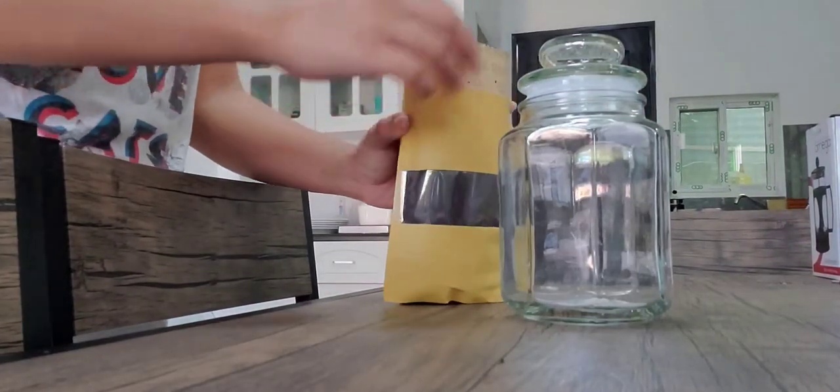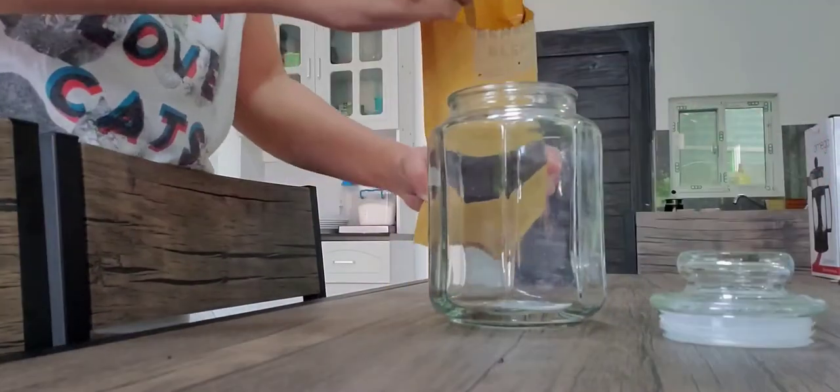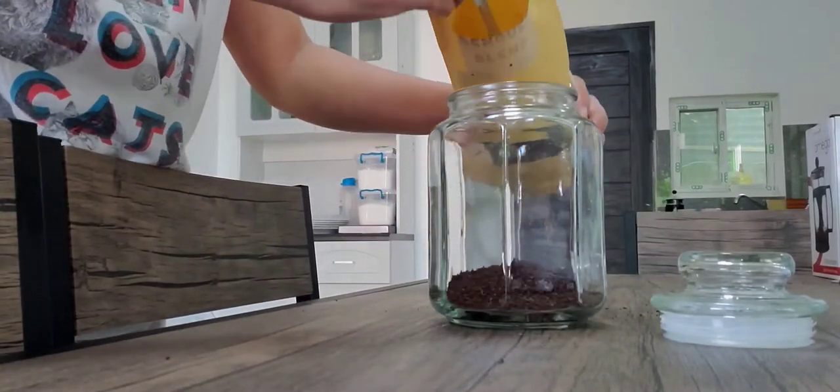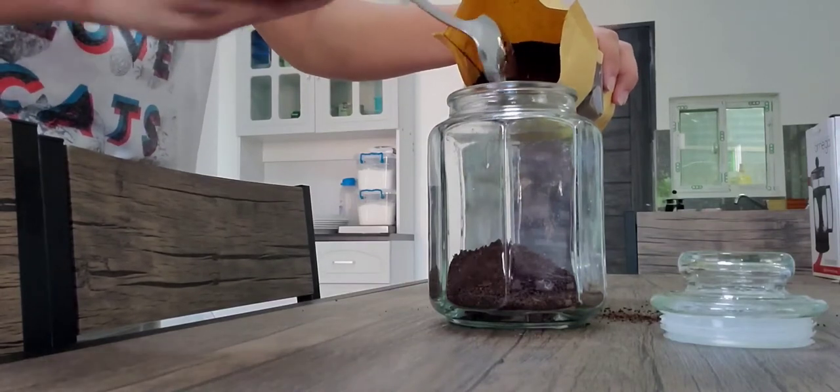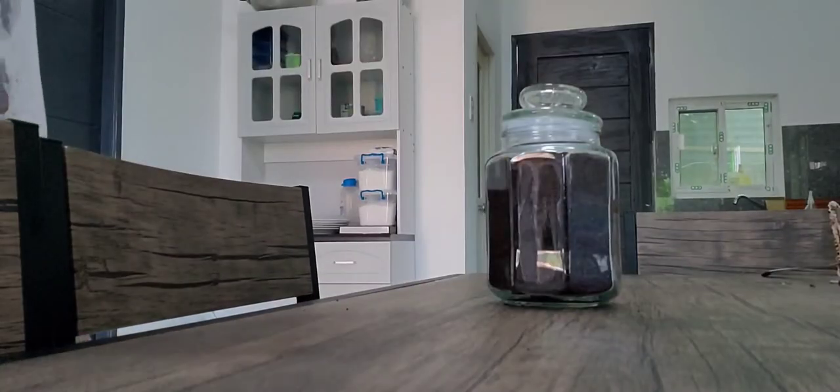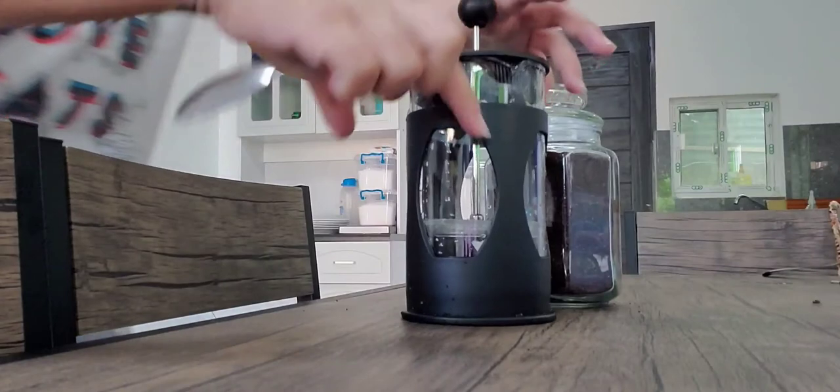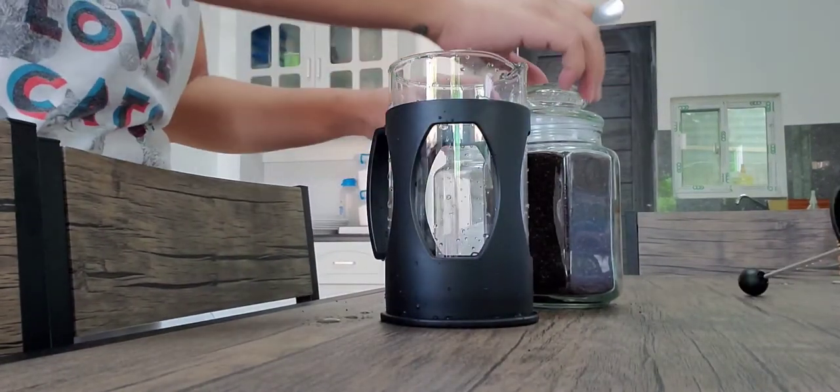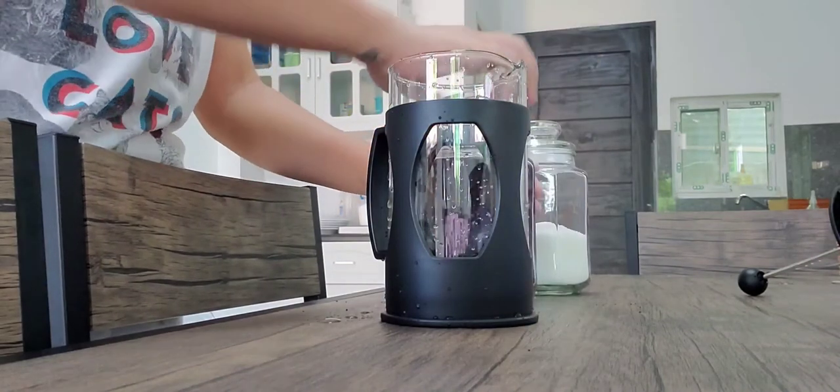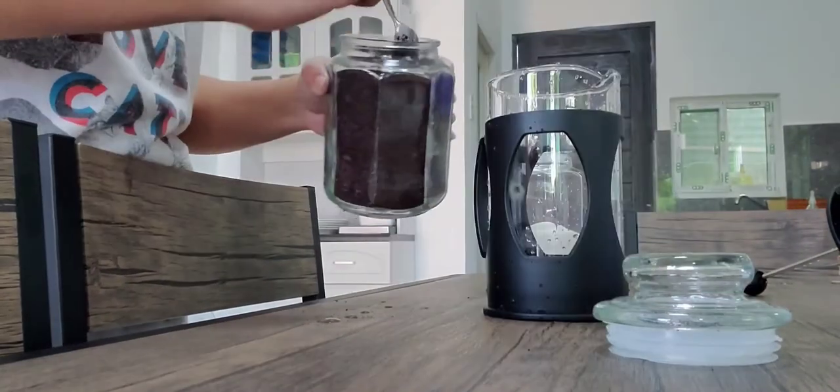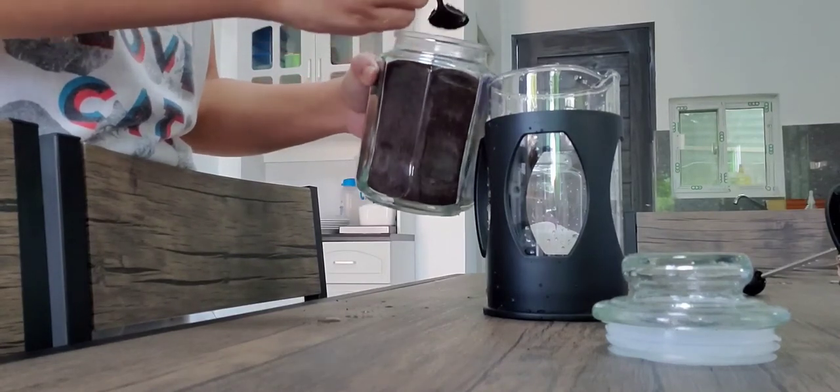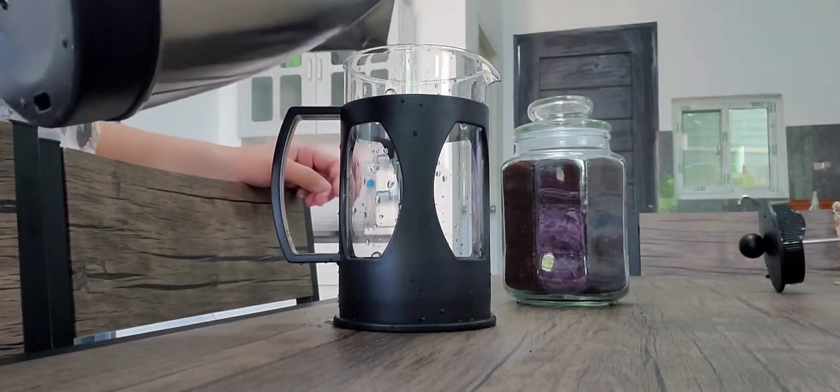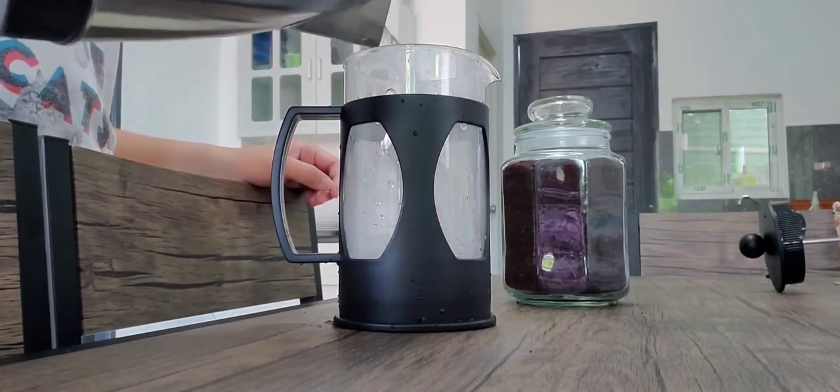We have to transfer our coffee grounds into a jar. I put about 5 teaspoons of coffee grounds into my French press. Then add your boiling water.